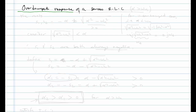Now we want to consider the overdamped response of the series RLC. This is the case where alpha is greater than omega_n. Let's recall the roots for the series RLC: S1 and S2 equal minus alpha plus or minus the square root of alpha squared minus omega_n squared.